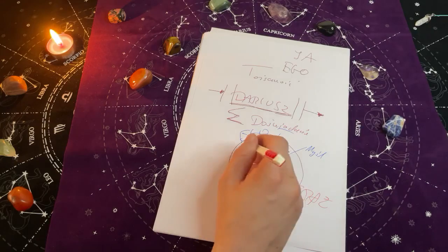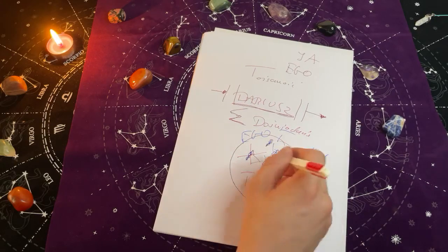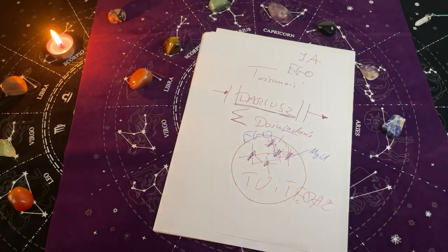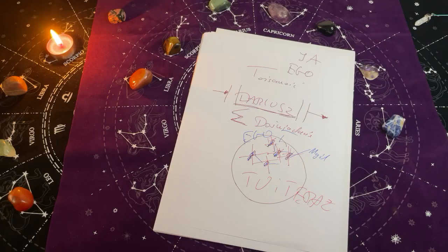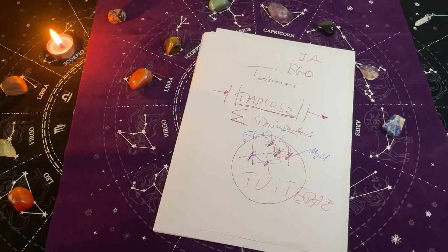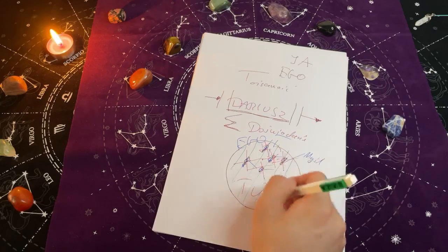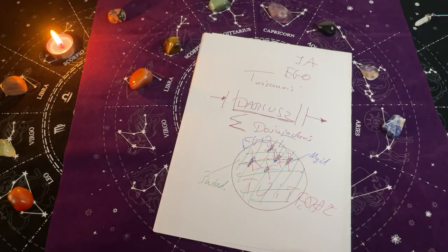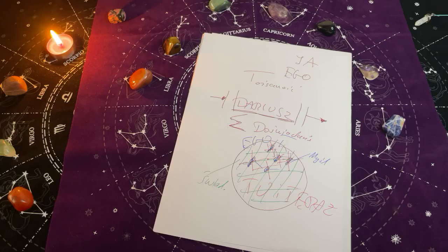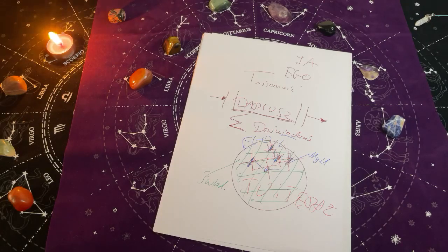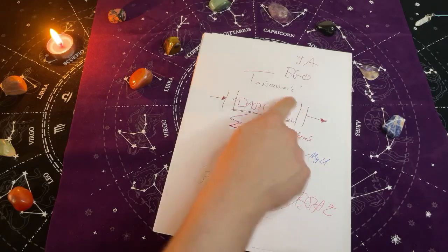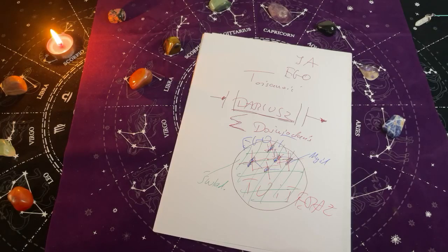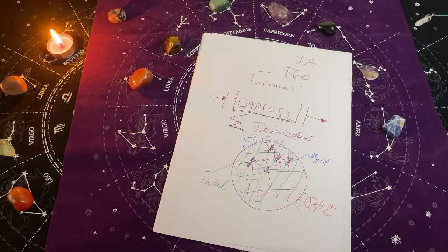Gdy zaczynamy medytować i rozpuszczać te myśli, to nasza świadomość zaczyna wzrastać. Te wszystkie brudy w świadomości zaczynają znikać, rozpuszczać się. Świadomość zaczyna stawać się jednolitym polem istnienia, stawać się czystą świadomością, czyste pole istnienia, czysta świadomość bez myśli. I w tym stanie świadomości pojawia się pewien problem, bo okazuje się, że ten Dariusz, ta suma doświadczeń, suma tych myśli, to co miało być skarbcem, taką wartością w tym życiu, okazuje się, że to się rozpuszcza.